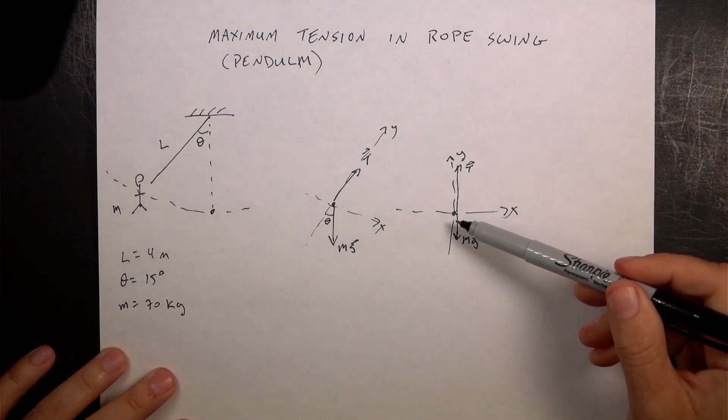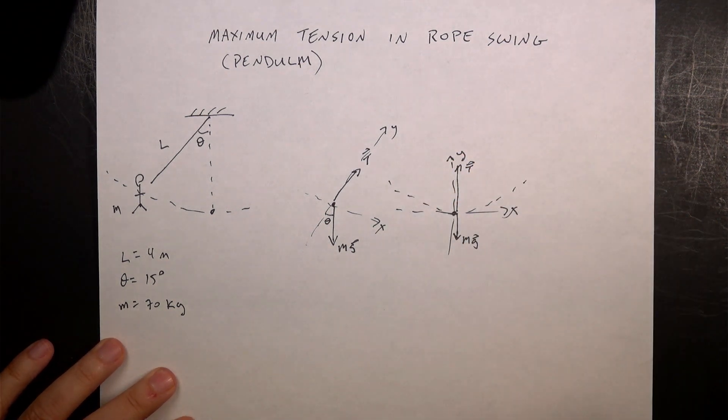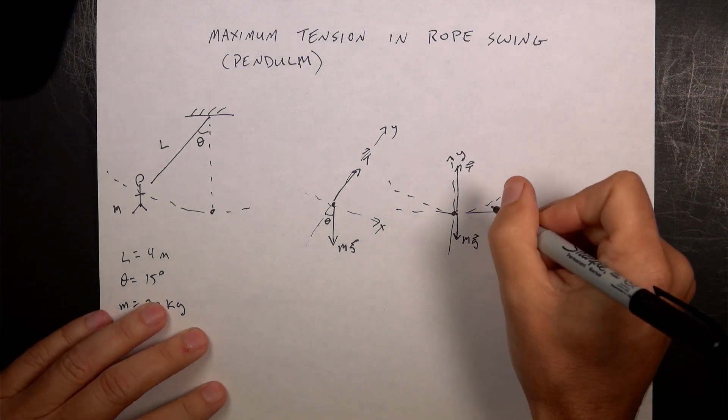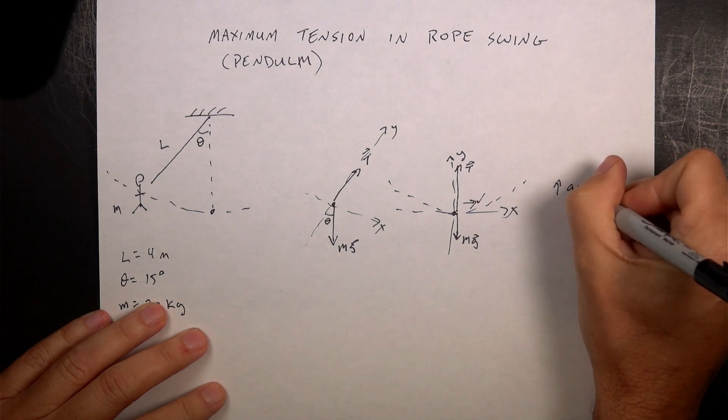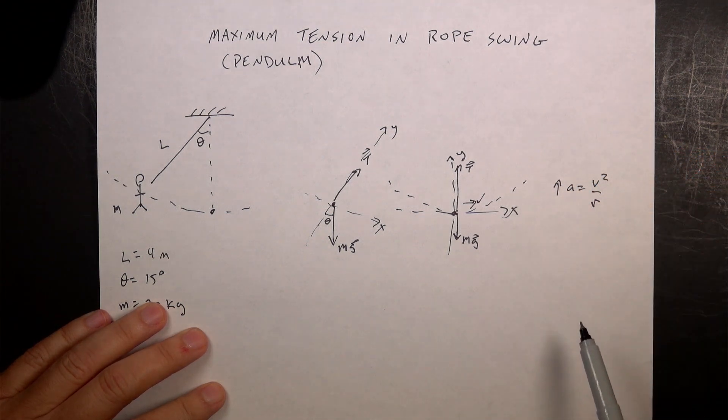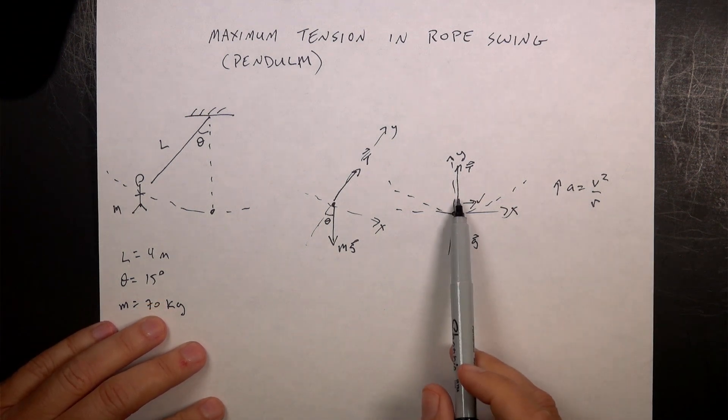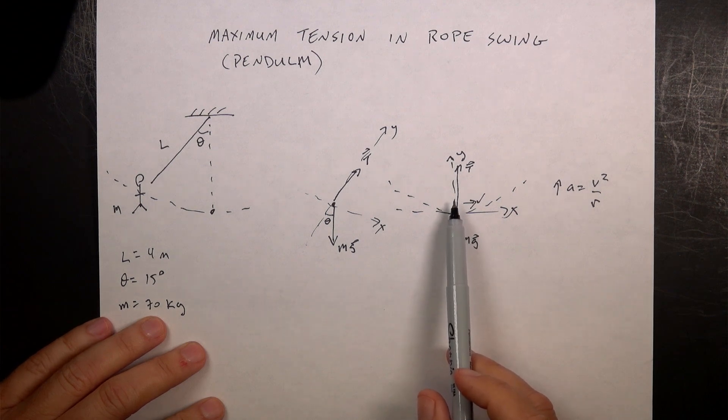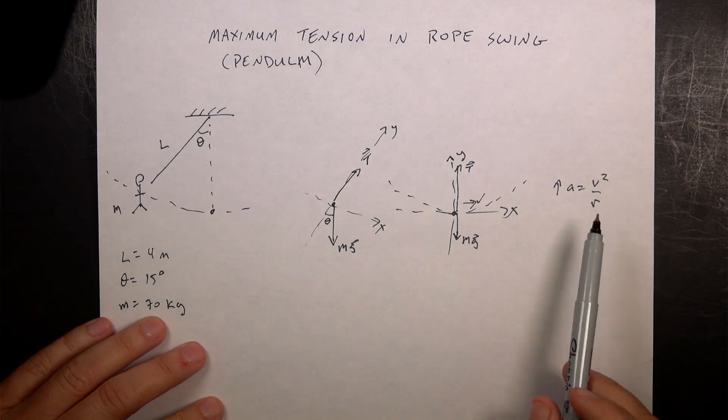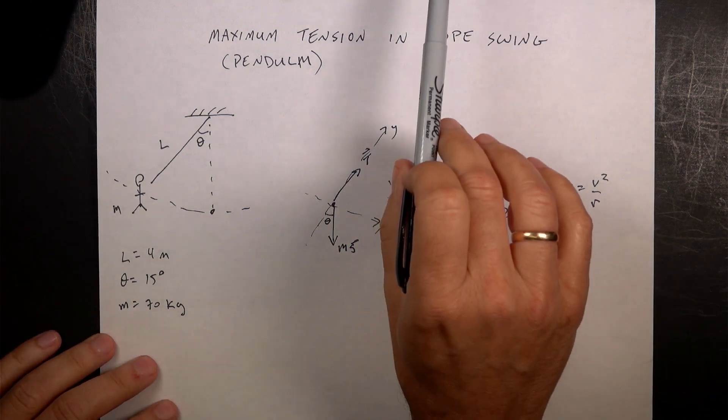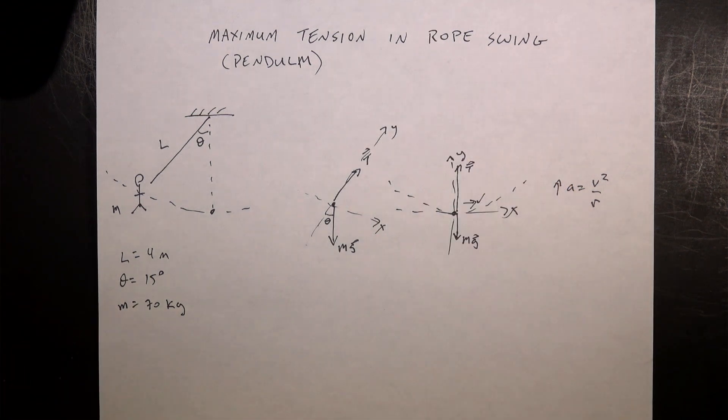And in fact, the tension is greater than the gravitational force because at this instant, the person is moving in a circle. If the person is moving in a circle with some velocity v, then there will be an upward acceleration of v squared over r. This is the circular acceleration, centripetal acceleration. If you have an object moving in a circle, then the direction of the acceleration is towards the center of the circle. And the magnitude depends on the velocity and the radius of curvature, which in this case is l. So in order to make the person accelerate towards the center of the circle, the tension has to be greater than the gravitational force. And this is where the tension is going to be the maximum.